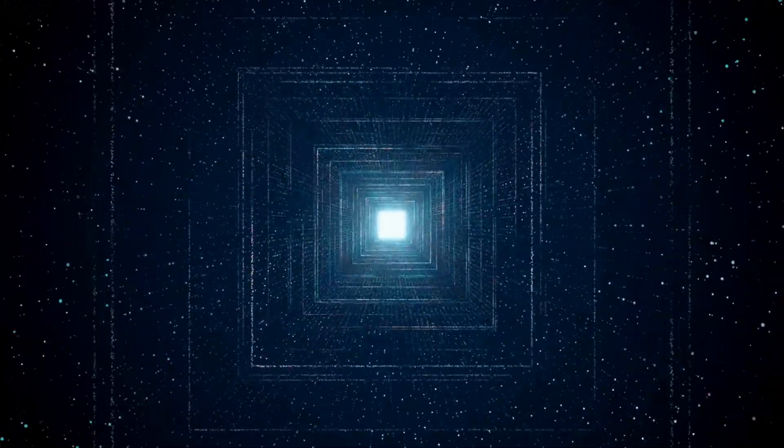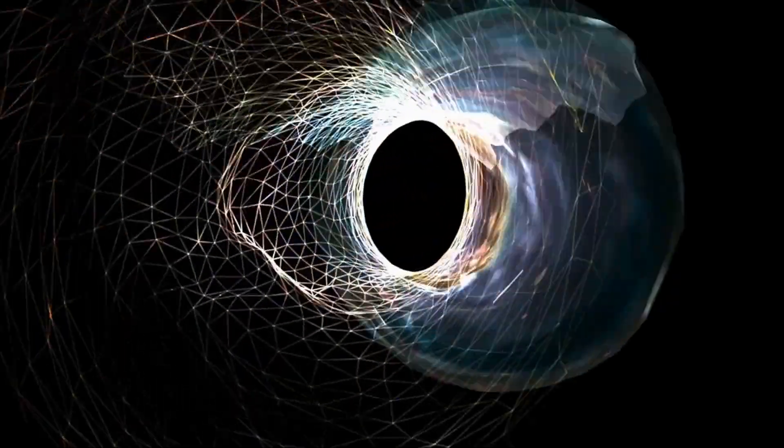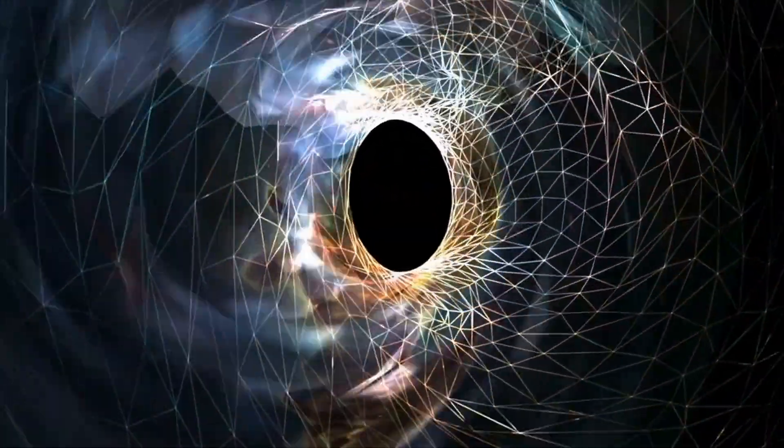Muons are elementary particles that belong to a group called leptons, which are subatomic particles that can't be broken down any further. You can think of leptons as tiny building blocks that make up the universe.